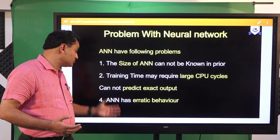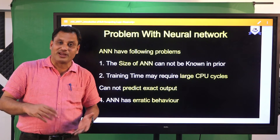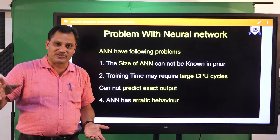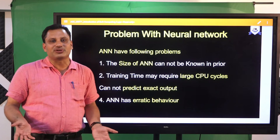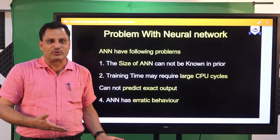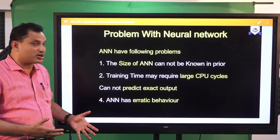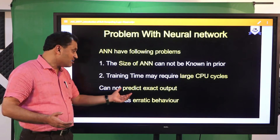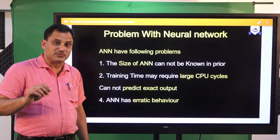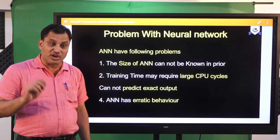ANN cannot predict the exact output — this is very important. If we have a y = f(x) situation where an exact solution is required, a linear function can serve that purpose and there is no need to use ANN. The problems we are going to solve by applying a neural network do not require an exact solution. ANN brings you very close to the solution, which is still very important because the problems being solved are critical in nature.